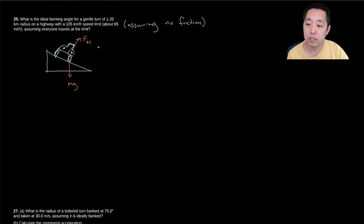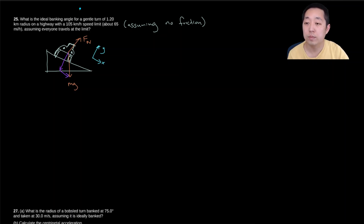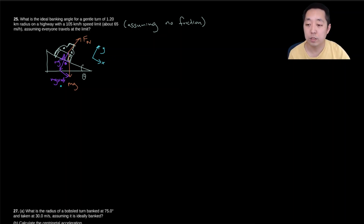We set up our axes: x axis and y axis. We break up the components of the normal force vector into its x and y directions as we do with inclined planes. This angle is theta. So the x-component is N sin θ and the y-component is N cos θ. If you had friction you'd include it on this diagram, but we don't. So the centripetal force is just the x-component, because the y-components cancel — it's not accelerating up or down the ramp.